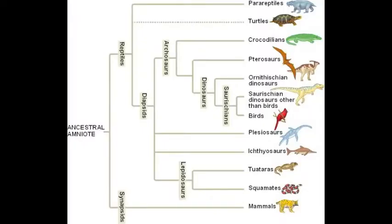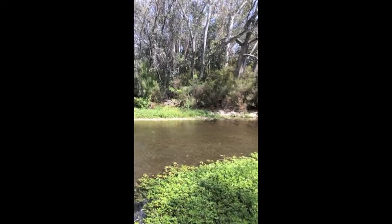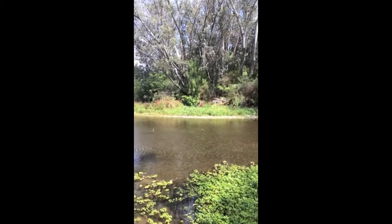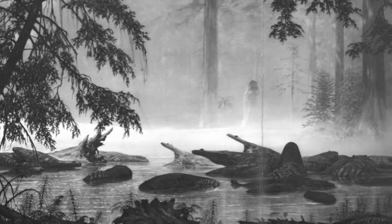Now that we have a brief understanding of how amniotes are classified, let's discuss the conditions which may have led to their divergence from their amphibian ancestors. In order to move into the terrestrial environment, you'd need a food source, habitat, and all the various components that animals need. What people think occurred was that during about 350 million years ago, it was a very wet, swampy time, and that was dominated by amphibians.